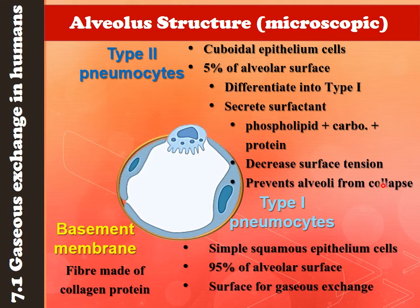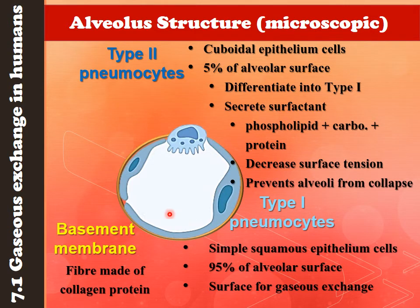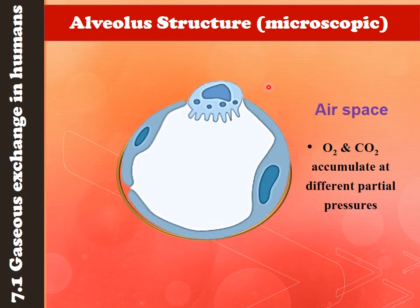The surfactant helps decrease surface tension between the gaseous air and the moist surface inside the alveolus, and also prevents the alveolus from collapse — similar to how cartilage prevents the trachea from collapsing. If type I pneumocyte cells are dead or damaged, type II pneumocytes can differentiate into type I. The airspace is where both oxygen and carbon dioxide accumulate based on partial pressure — when we inhale, oxygen partial pressure is high; when we exhale, carbon dioxide partial pressure is high.